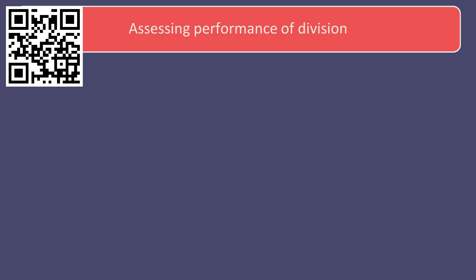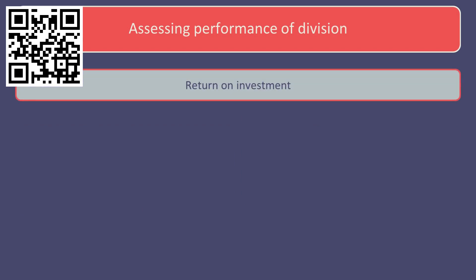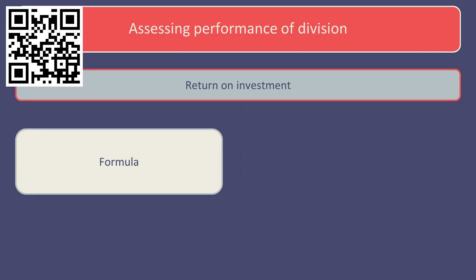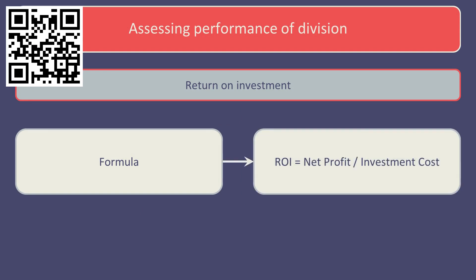Divisional performance can be assessed using return on investment and residual income methods. Assessment of divisional performance can be based on the return on its investment, calculated as the net profit of that investment divided by the investment cost. Traditionally, this has been a widely used measure in divisional performance assessment.